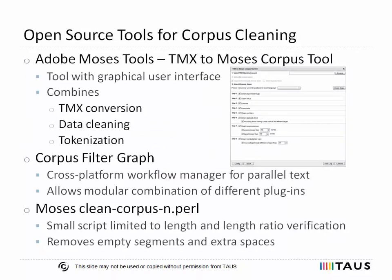There is a range of open source tools available to perform cleaning of parallel corpora. The Adobe TMX to Moses tool combines conversion from TMX, data cleaning, and tokenization, and can be used on all platforms. Corpus Filter Graph is an automation tool to combine filters in just the right way to create a corpus production pipeline customized for specific project data. Some of the filter plugins are only available in a commercial version. Moses itself contains a small cleaning script with a limited set of functionality. However, as should be clear from the wide variety of cleaning options, customized cleaning scripts written in popular scripting languages are often the best way to go.